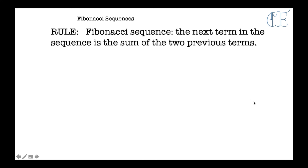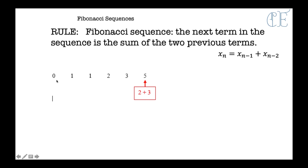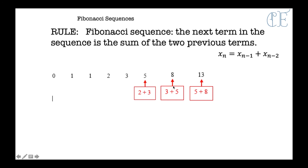The rule for the Fibonacci sequence: the next term in the sequence is the sum of the two previous terms. As you can see here: 0, 1, 1, 2, 3, 5 — this 5 is made up of 2 and 3 added together; 8 is made up of 3 and 5 added together; and 13 is made up of 5 and 8 added together, and so on.